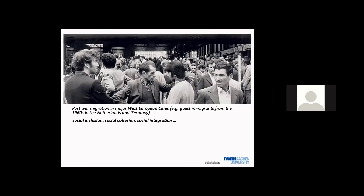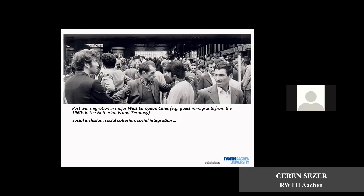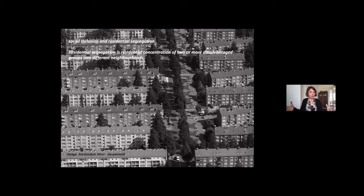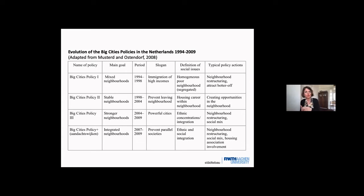Social cohesion, social integration, and social inclusion have been subjects of interest both in policy and public debates. When related to the built environment, social inclusion has very often been argued in residential terms. You might have heard of the concept of residential segregation — it is identified as the residential concentration of two or more disadvantaged groups into different neighborhoods. The assumption is that when a disadvantaged group is concentrated in one urban neighborhood, it is less likely they will have more social contacts with other groups or the broader society, which is a negative impact on their social inclusion.